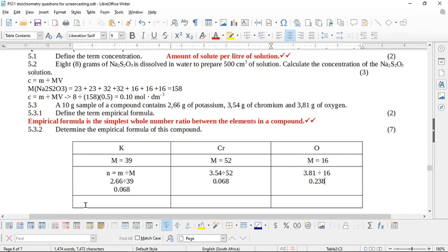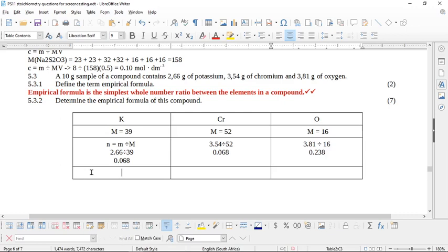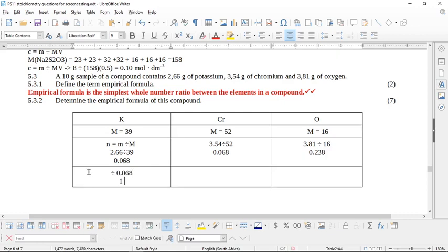Okay, so now we have found the number of moles that each of these masses are. What do we need to do? We need to divide by the smallest number. So all of these are going to be divided by the smallest number, which is 0.068. So this one's going to be 1, this one's also going to be 1. And we're going to divide this one by 0.068, and it's going to give us 3.5.